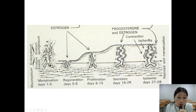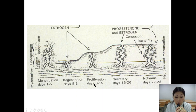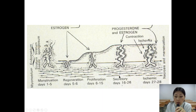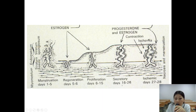During menstruation, days 1 to 5, sloughing of the stratum functionalis occurs, followed by regeneration on days 5 to 6. During proliferation, days 6 to 15, the endometrium becomes thicker and the endometrial glands become longer. During the secretory phase, days 16 to 26, further changes are visible.